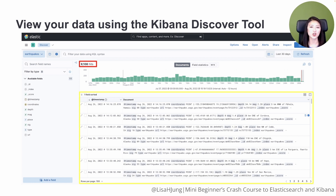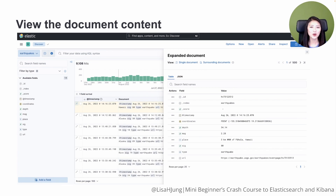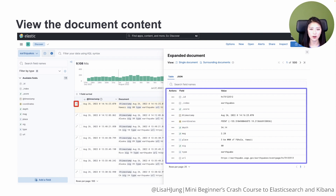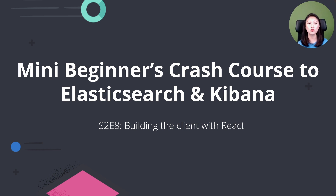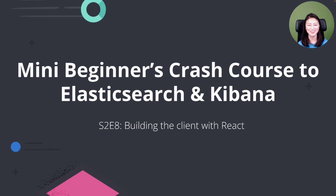The table displays documents within the Earthquakes index, and each row displays information about a document. When you click on the arrow, it'll show you the document content. You'll see that the document contains the desired fields and has the timestamp format we specified in Episode 6. In this episode, we retrieved earthquake data from an API and sent the data to Elasticsearch for data transformation and data ingestion. Now that we have data in Elasticsearch, it's time to set up our app for search. In the next episode, we'll build a client with React so users can specify the earthquake data they're searching for. Thank you for watching, and I'll see you in the next episode.